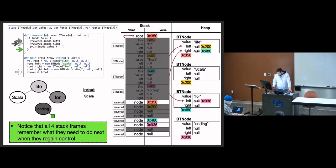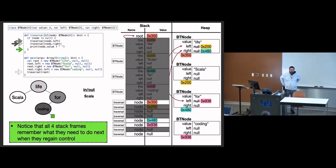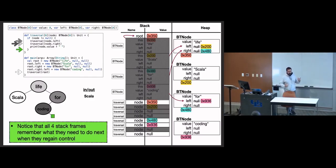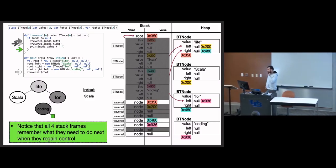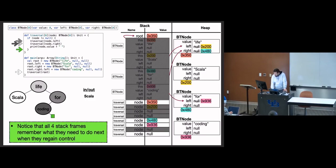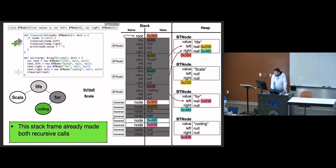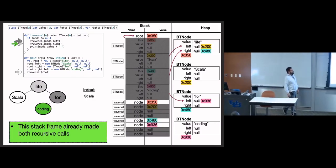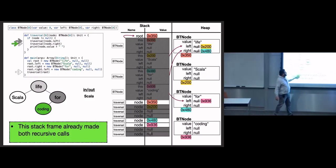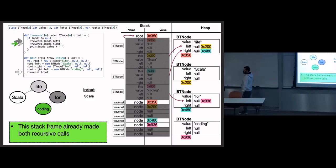There's a register — RIP stands for Instruction Pointer — that points to where in memory because your actual compiled code is stored in memory with memory addresses, and we use those addresses to remember where we are in execution.